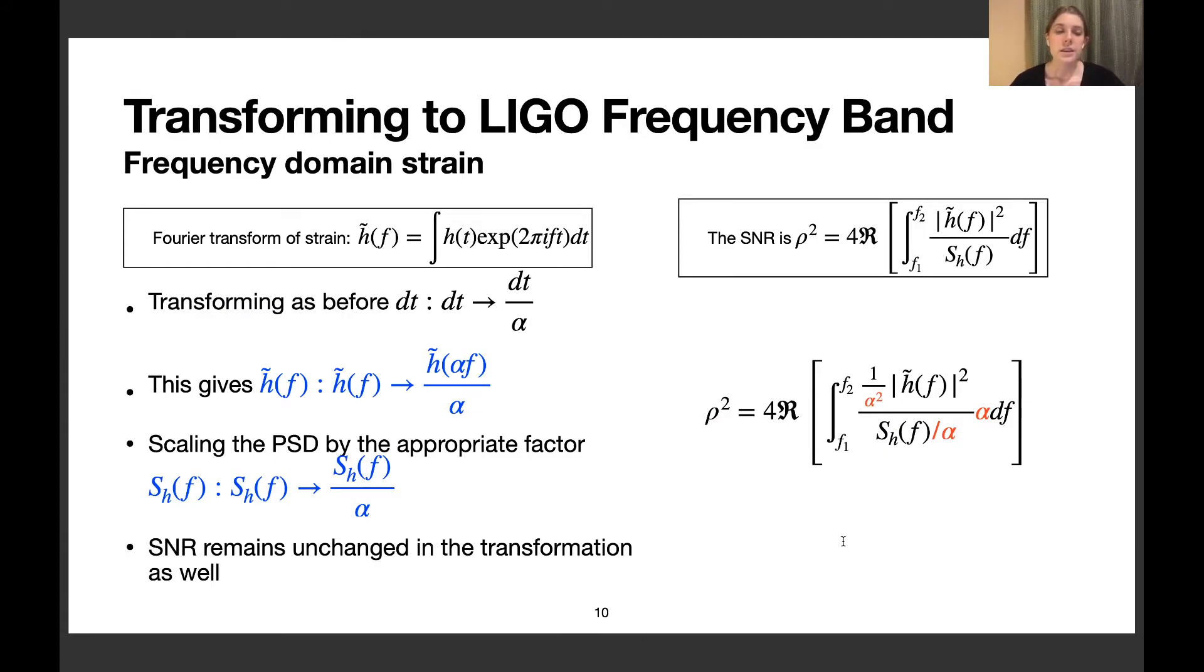In the frequency domain, we apply all the same transformations. We come up with an extra factor of 1/α in the H̃(f). To leave the SNR unchanged in the transformation, we also scale the PSD down by a factor of α. All the alphas cancel out and the SNR is unchanged.